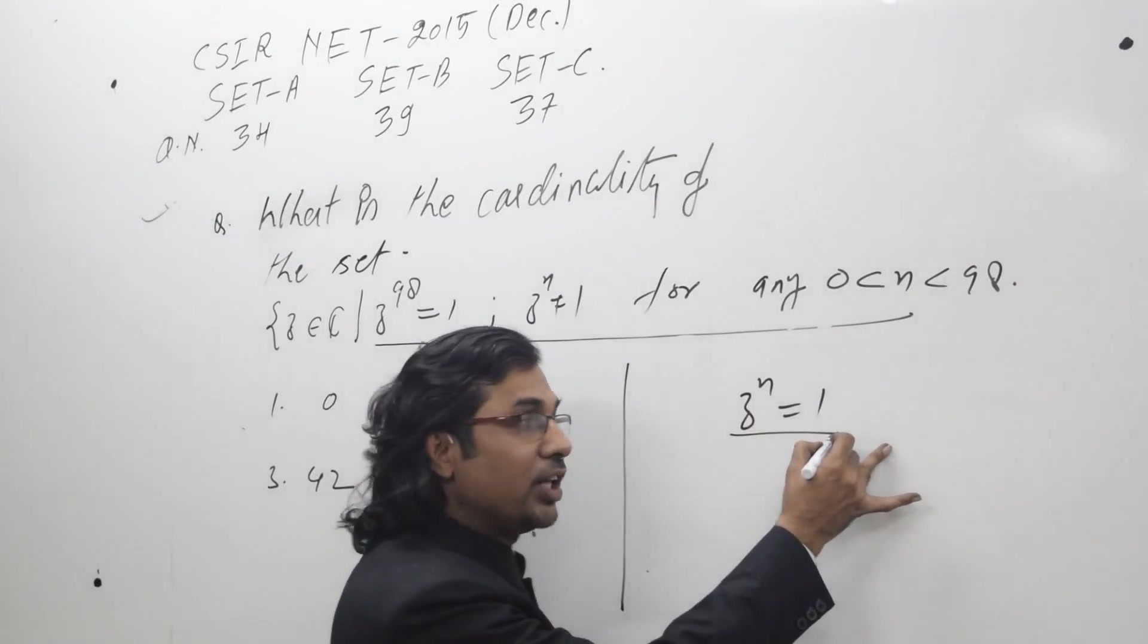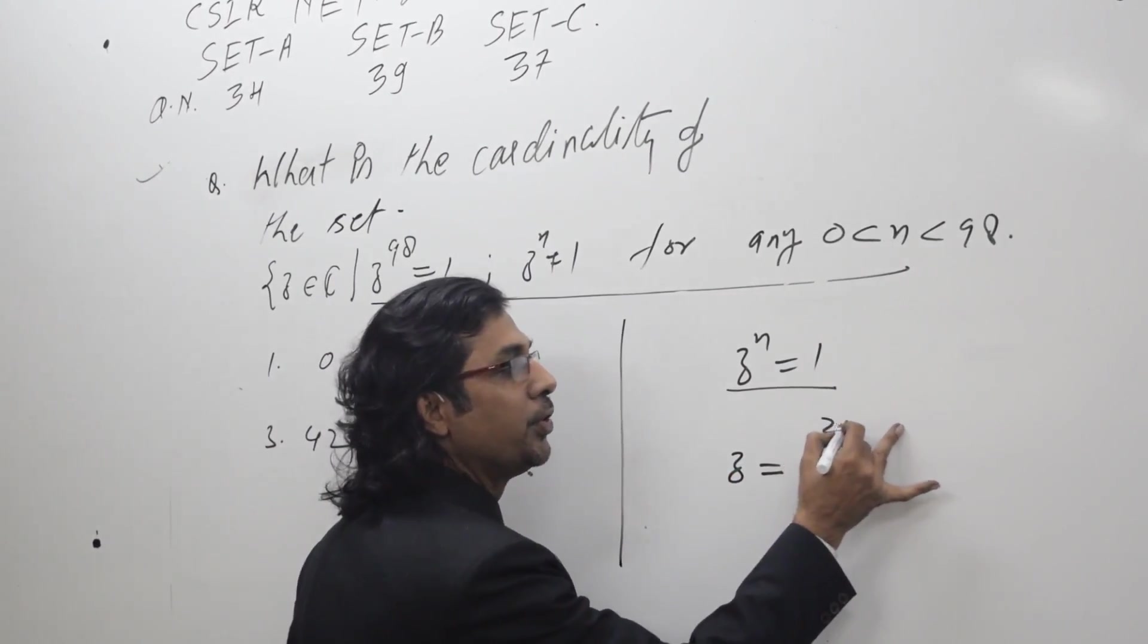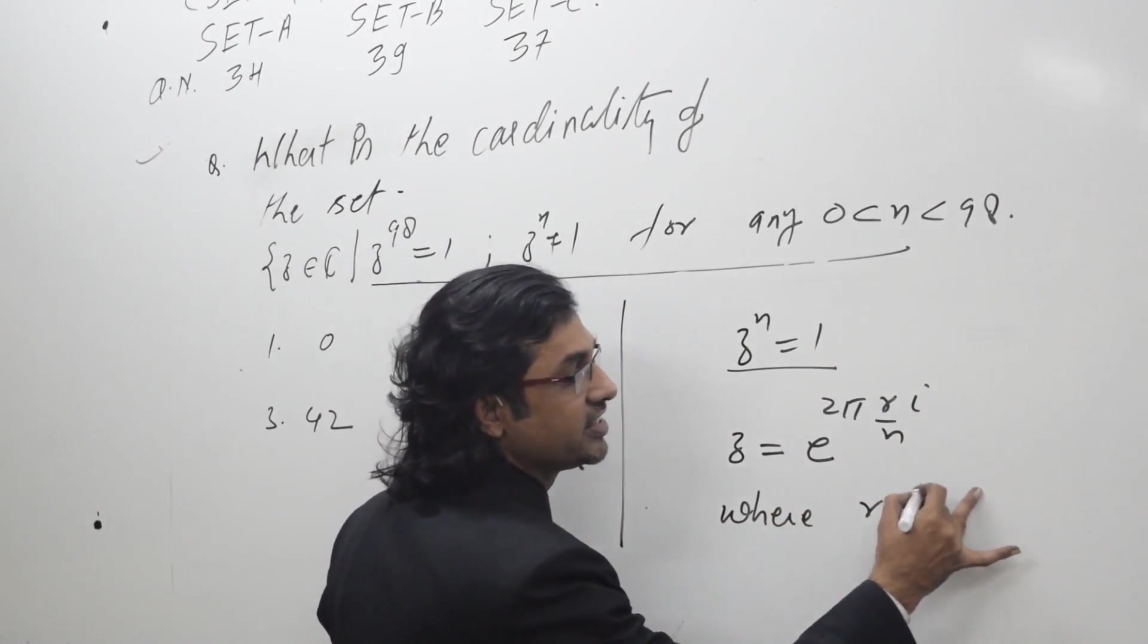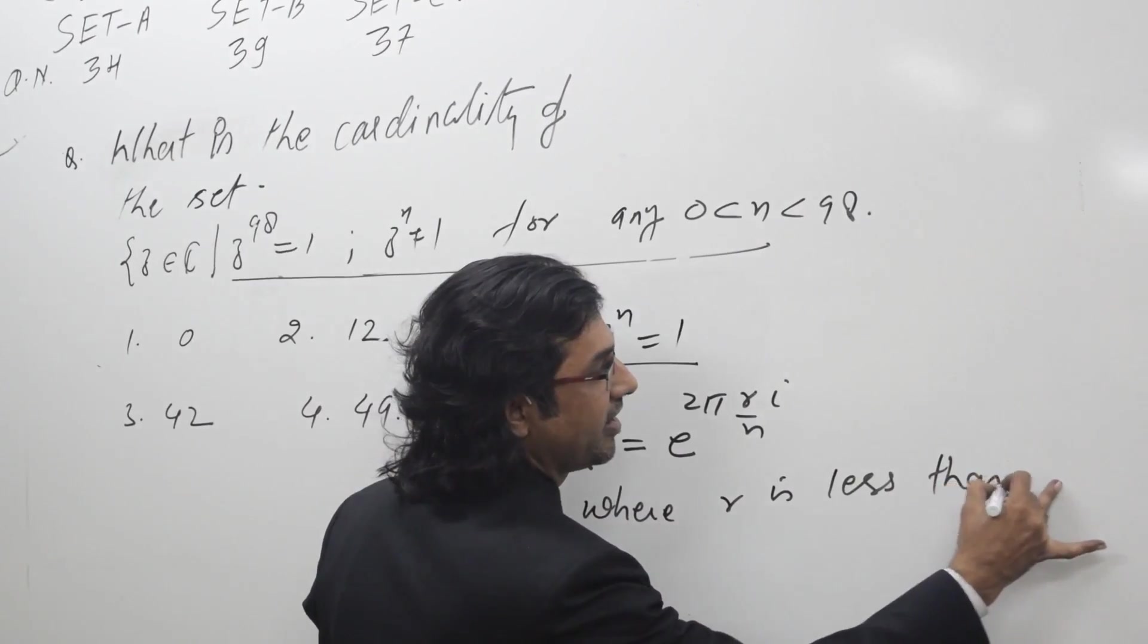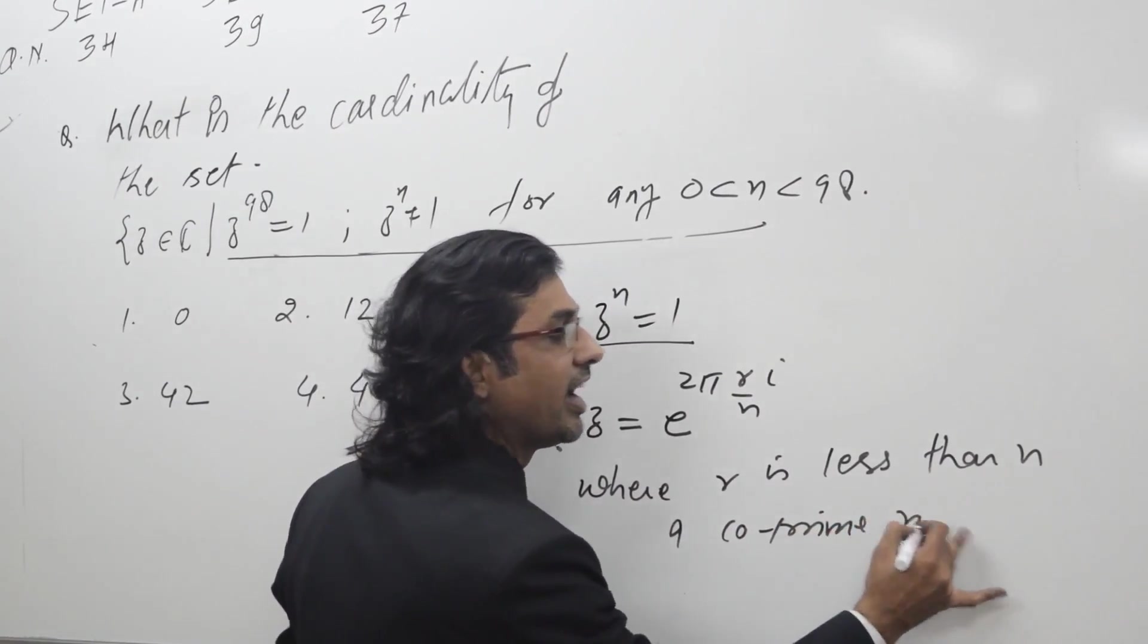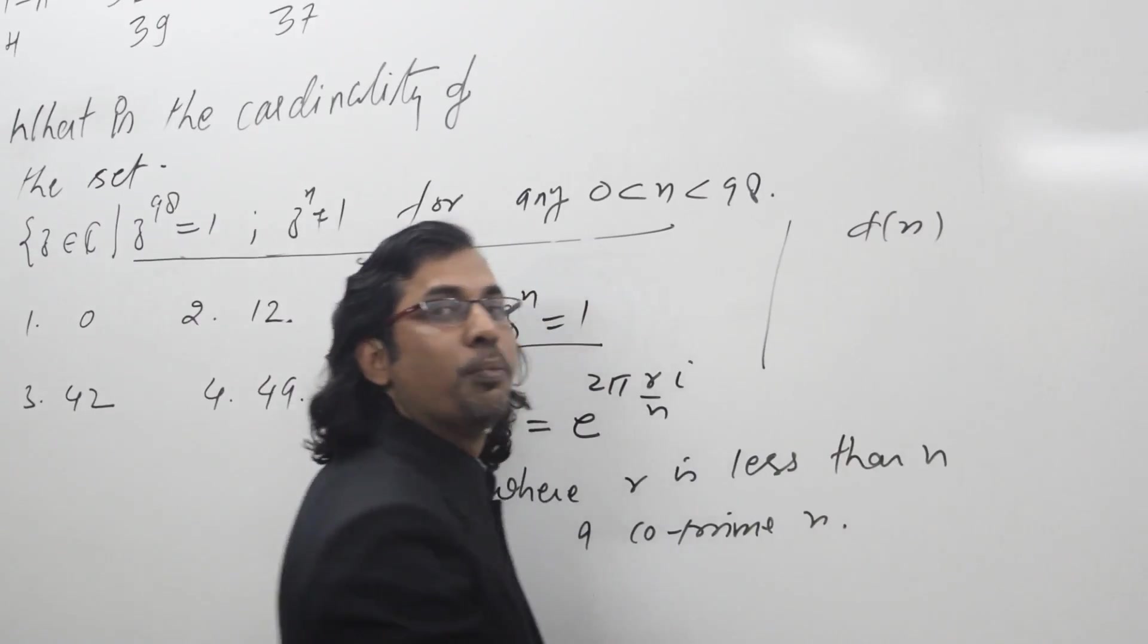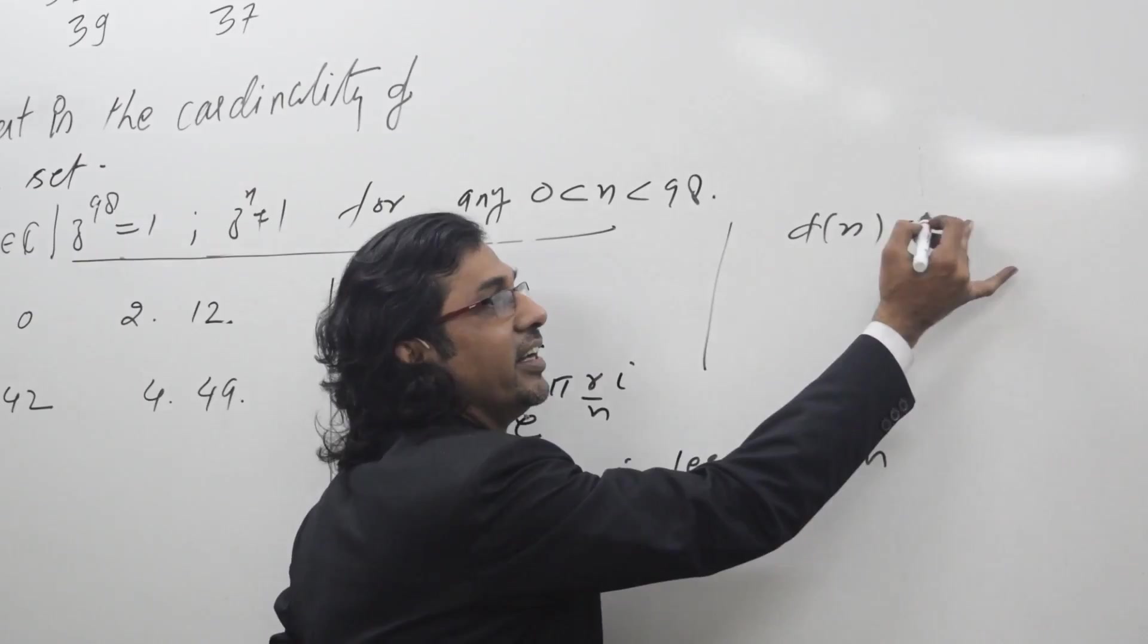And those numbers are of the form z equals e to the power 2πri/n, where r is less than n and co-prime to n. And we have the formula for finding the number of elements less than n and co-prime to n, given by the Euler phi function.